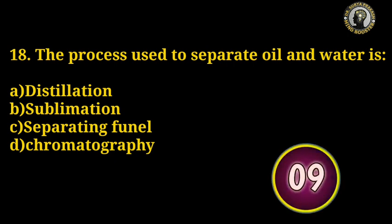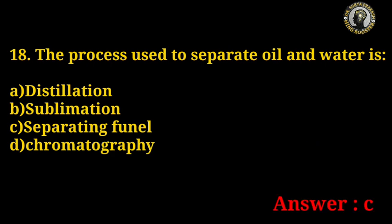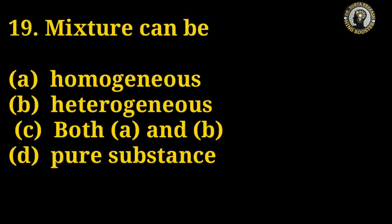Question number 18: The process used to separate oil and water is which of the following? Options: distillation, sublimation, separating funnel, chromatography. The right answer is C — separating funnel.